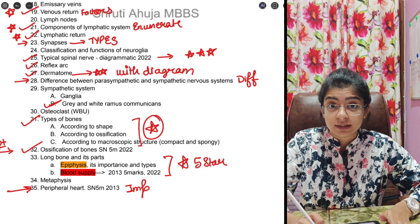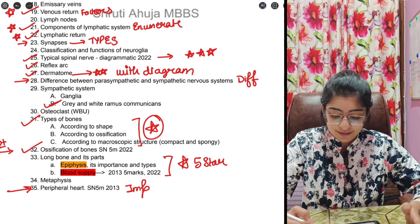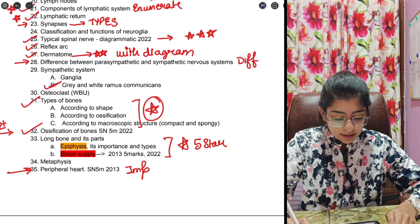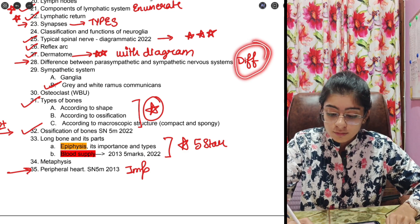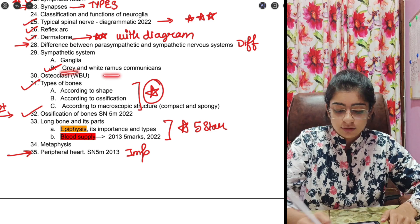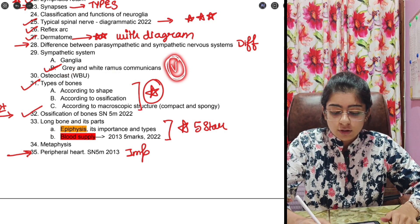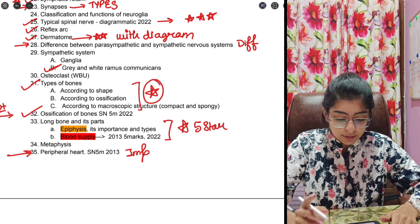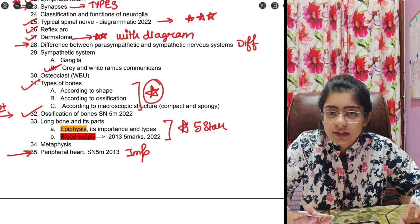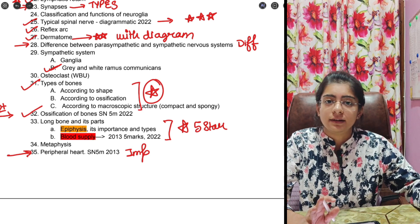Difference between parasympathetic and sympathetic nervous system is also an easy question but again double the points. Next is gray and white rami communicants. It is also given in Vishram Singh as a difference. If you have the chance that the examiner has not asked you to write a difference but you can and you have the points, then you do write it like that because that is a better way to present.